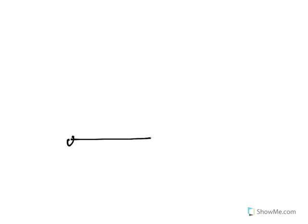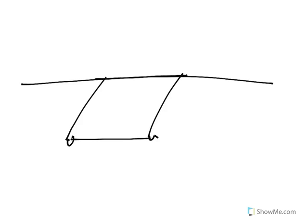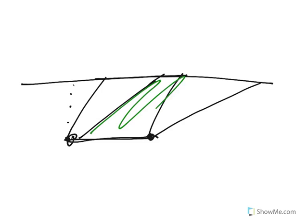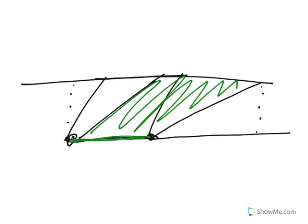If two parallelograms have the same base — here's a parallelogram with this base and this height — and I make another parallelogram with the same base going out at an angle, this new parallelogram will have the same area as the original. It has the same base literally, and its height is equivalent because the height of a parallelogram is the distance between the two parallel lines. So both bases and heights are equal, and therefore the parallelograms have the same area.